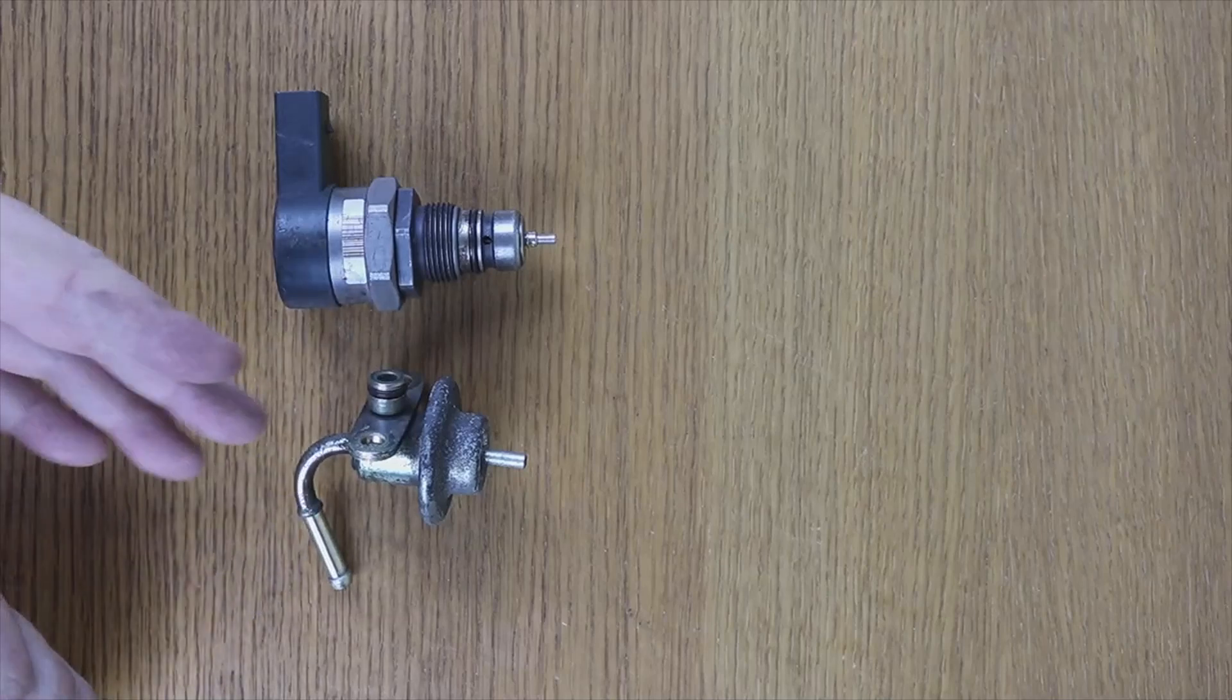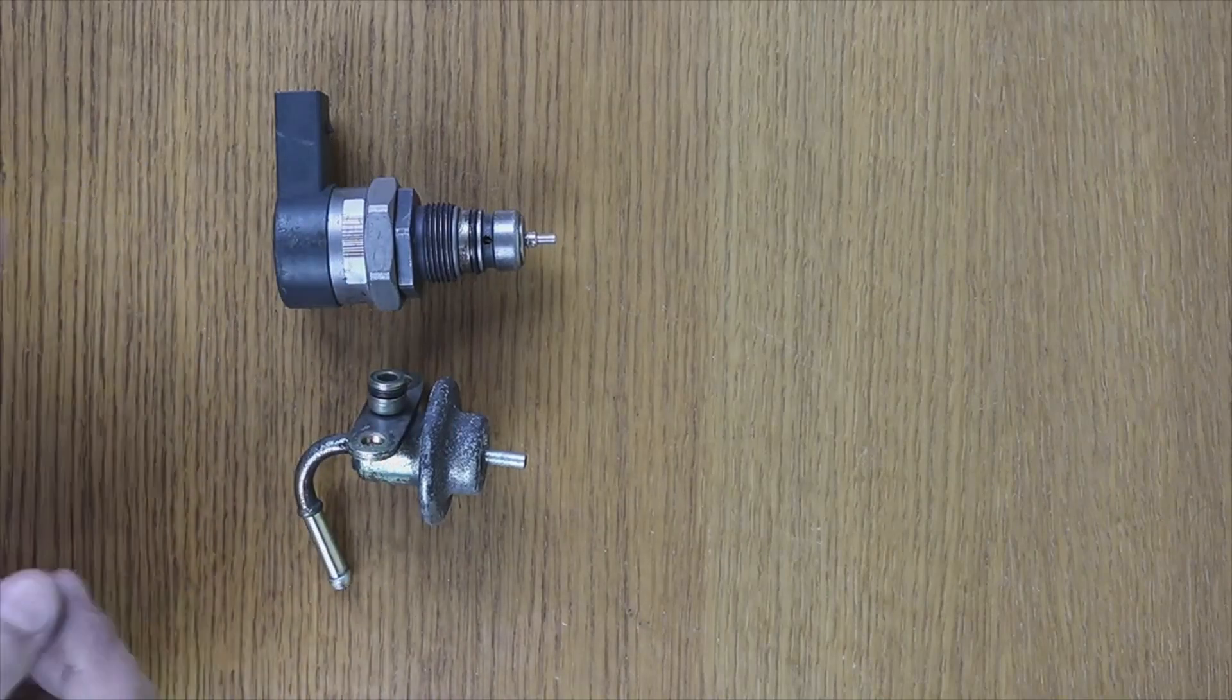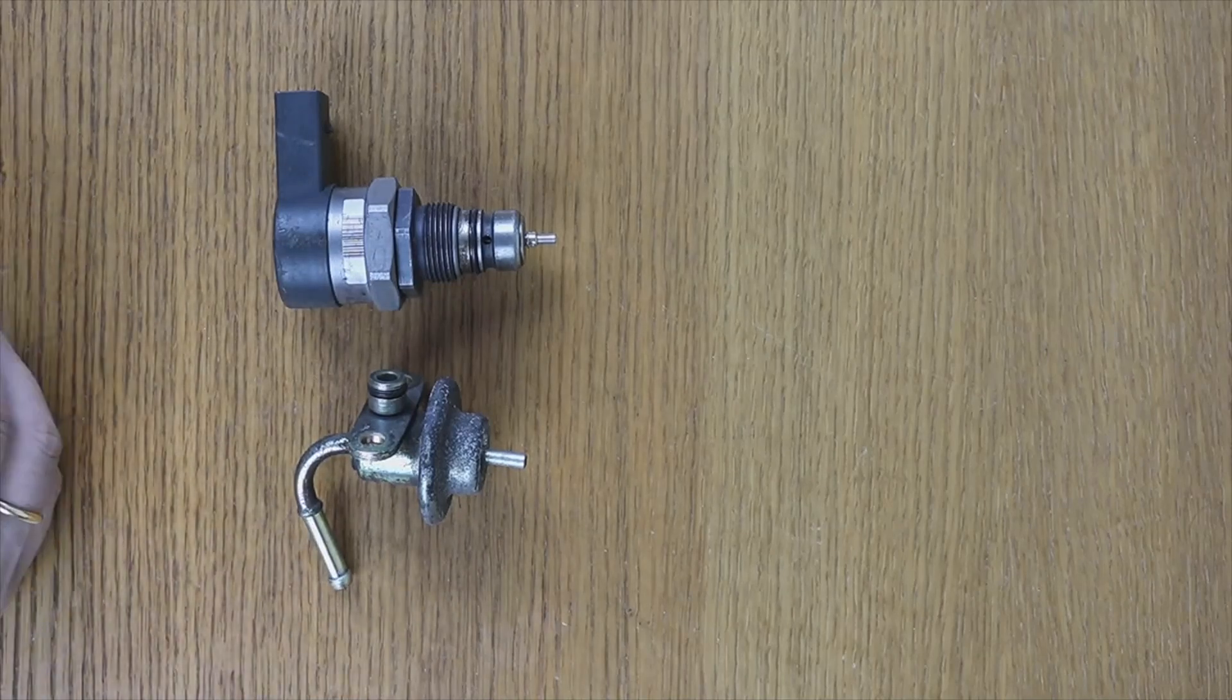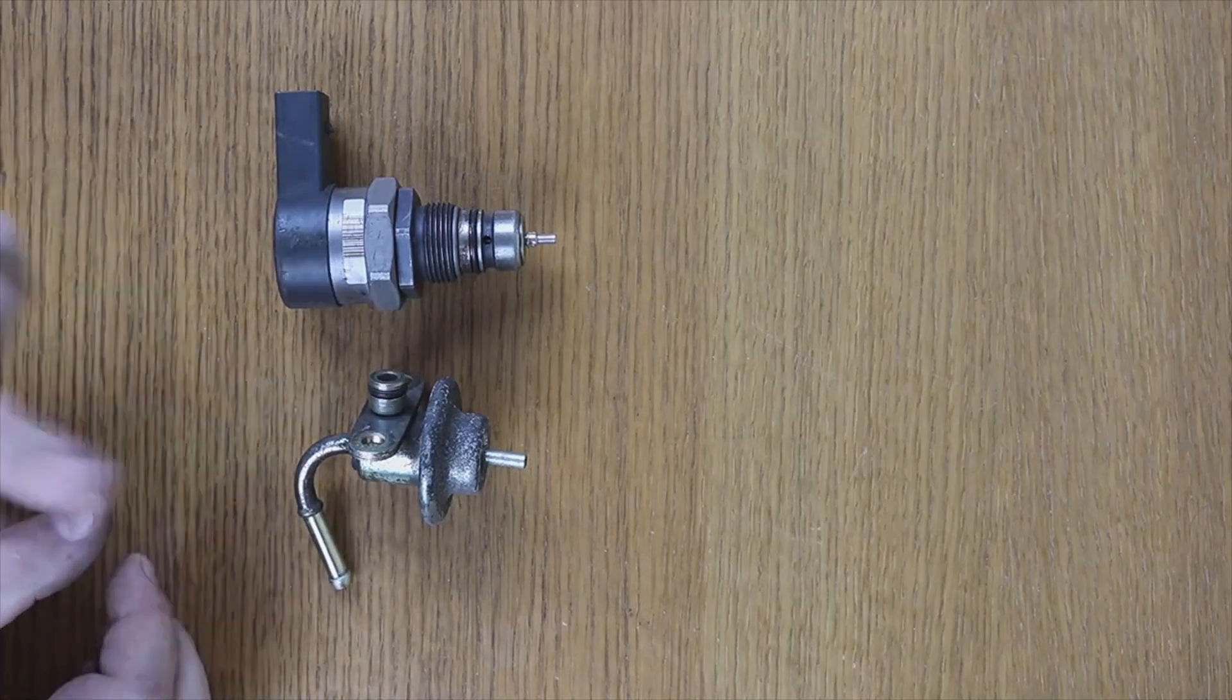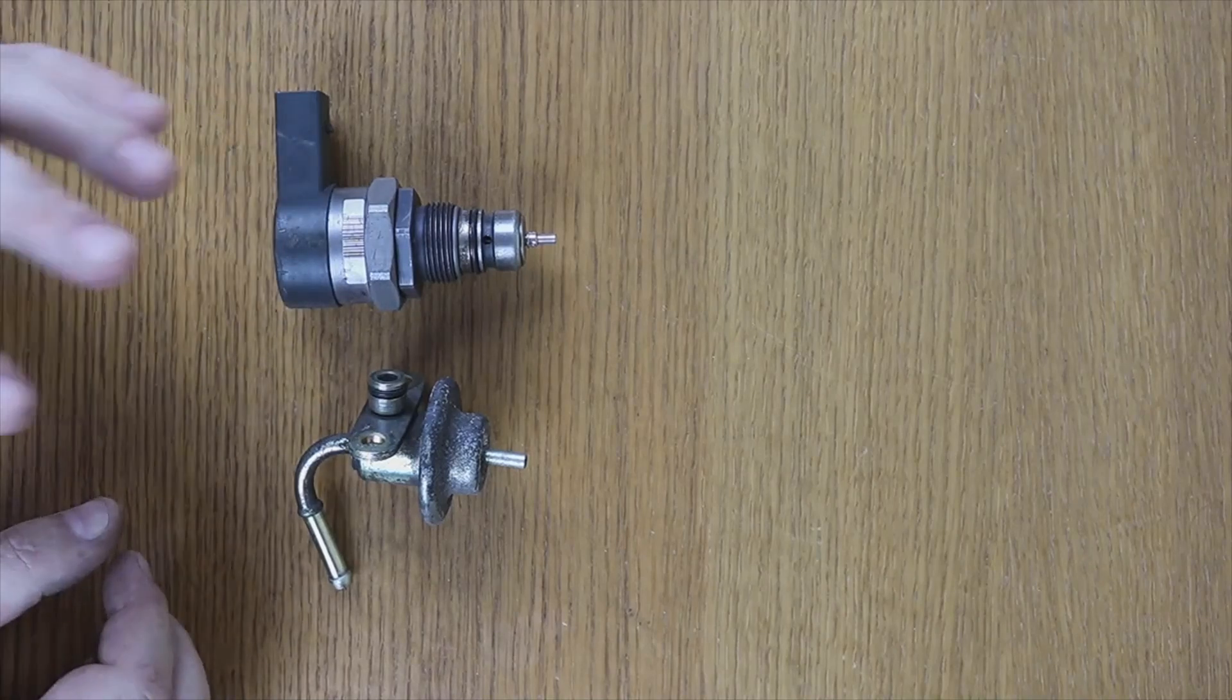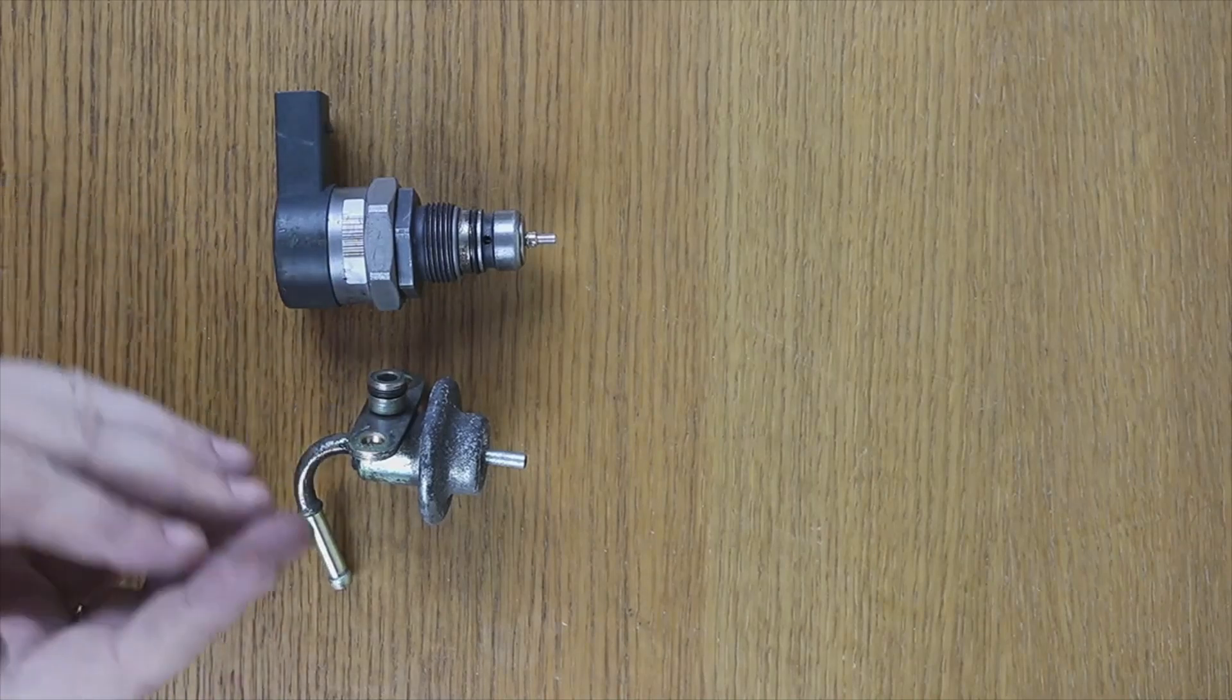The operation of this valve: when the vehicle is idling, the lowering of the piston inside the cylinder creates that vacuum and opens that valve. With this, the pressure is controlled. If we accelerate, it is the pressure of the gasoline itself that makes the spring that it carries inside together with the membrane yield, and it would open, pouring the excess gasoline into the return.